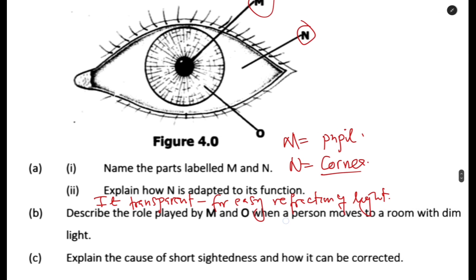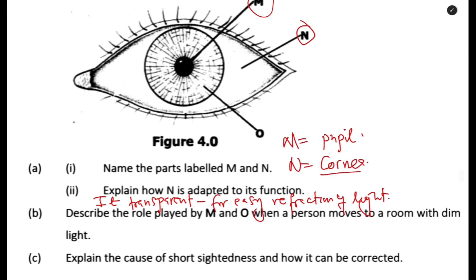Then the other question is, describe the role played by M and O when a person moves to a room with dim light. So M, we said is the what? It's the pupil. So, the pupil dilates. So, M, so it dilates.